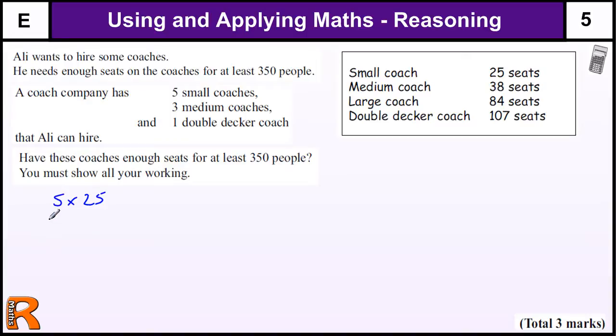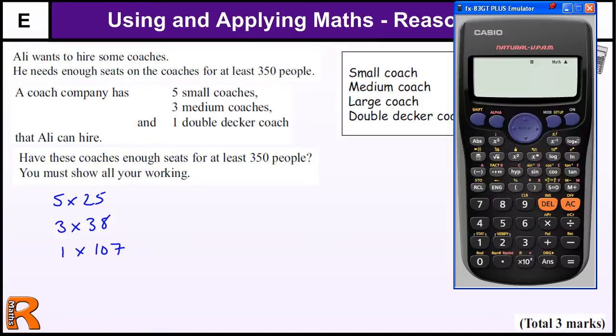We have 3 medium coaches which is 3 lots of 38, and 1 double decker, 1 times 107. As we're allowed to use a calculator, we must get a calculator out for this. 5 times 25. It does say we must